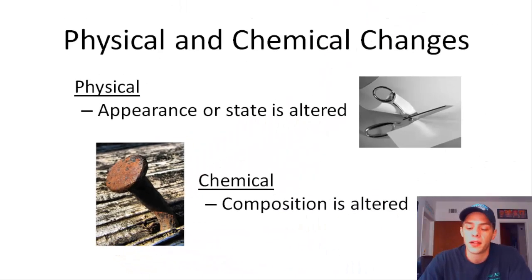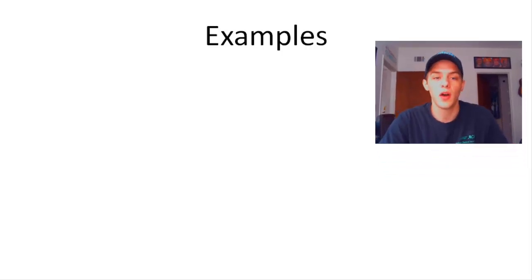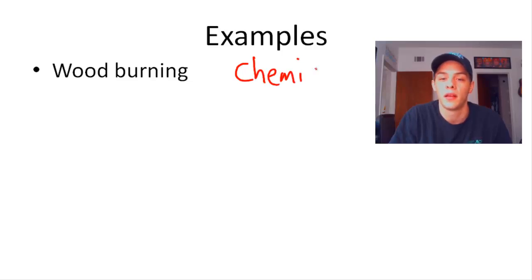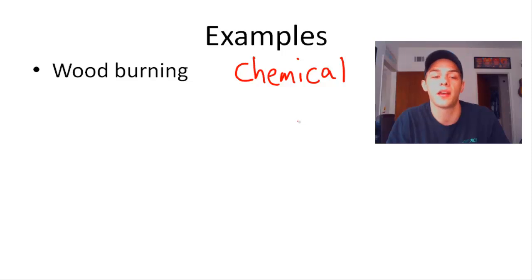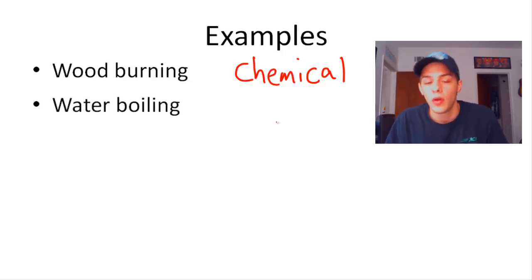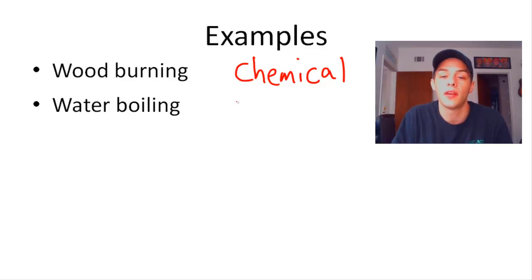Let's work through some examples to determine whether they are physical or chemical changes. Wood burning — is that a physical or chemical change? It's a chemical change, because the composition of the wood is actually changing; it's burning and becoming brand new substances. What about water boiling? Boiling is a type of vaporization — a change from the liquid to the gas phase — so water boiling is actually a physical change.